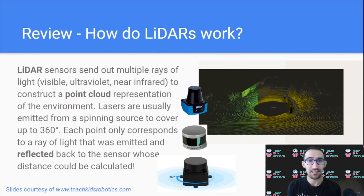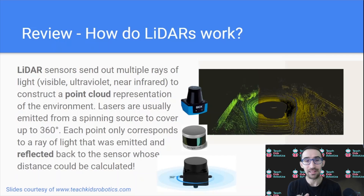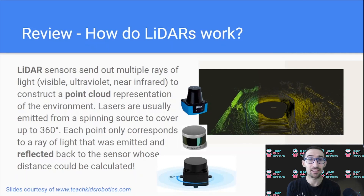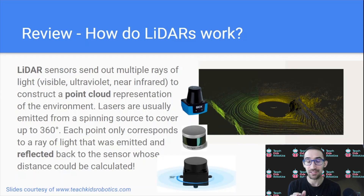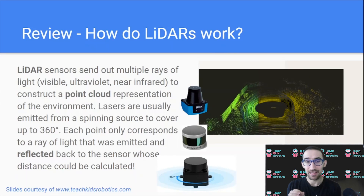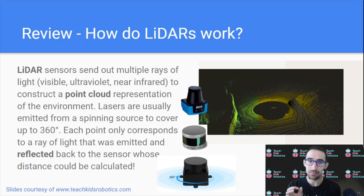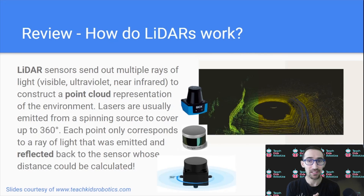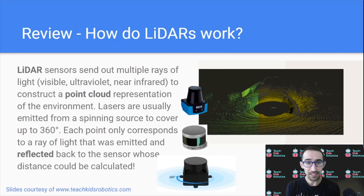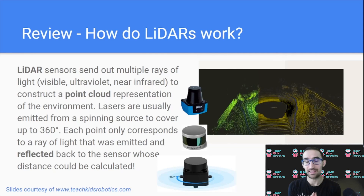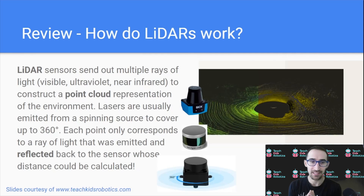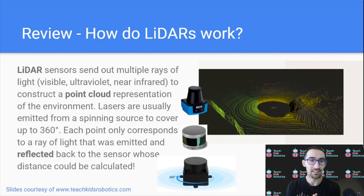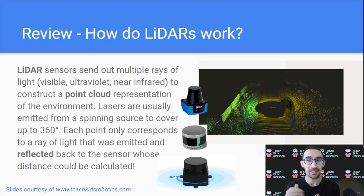These LiDAR sensors send out multiple rays of light that could range from visible, ultraviolet, to near-infrared to construct a point cloud representation of the environment. Lasers are usually emitted from a spinning source to cover up to 360 degrees, as visualized in this GIF. Each point only corresponds to a ray of light that was emitted and reflected back to the sensor, whose distance could be calculated — so each point in the point cloud reflects one ray of light.